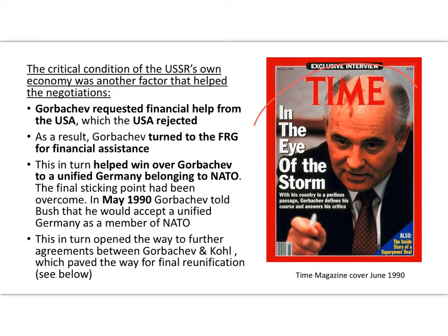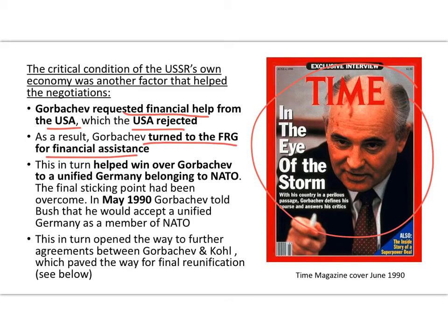The critical condition was Gorbachev. He was desperately seeking financial help — he asked the USA, the USA rejected it. So Gorbachev turned to West Germany for financial help, enabling Kohl to overcome that final sticking point. In May 1990, Gorbachev told Bush that he would support a unified Germany that was a member of NATO. It was obviously a security risk, with NATO's frontiers moving closer to the Soviet Union, but given the economic state of his nation, he believed it was a risk he was prepared to take.